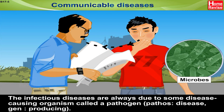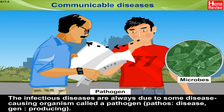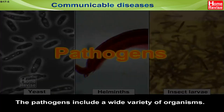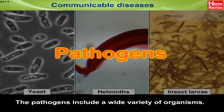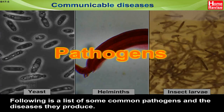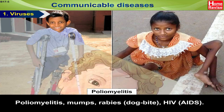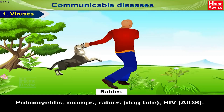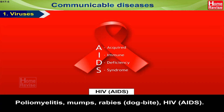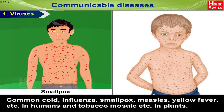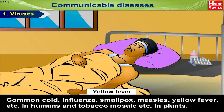Communicable diseases. The infectious diseases are always due to some disease-causing organism called a pathogen. 'Pathos' means disease, 'gen' means producing. The pathogens include a wide variety of organisms. Number one — viruses cause: poliomyelitis, mumps, rabies (dog bite), HIV/AIDS, common cold, influenza, smallpox, measles, yellow fever, etc. in humans, and tobacco mosaic, etc. in plants.